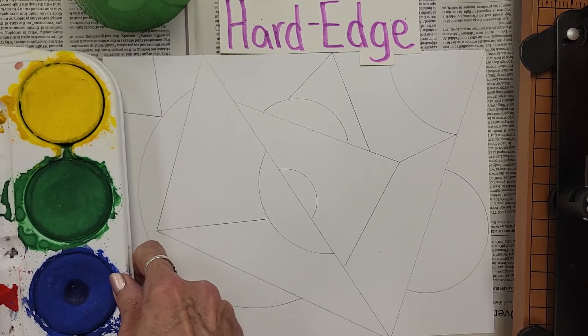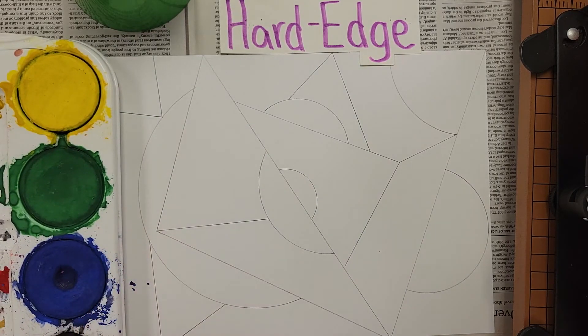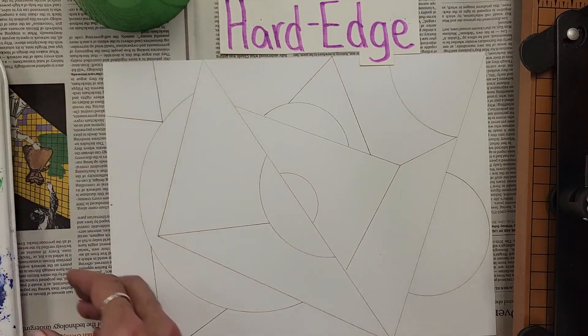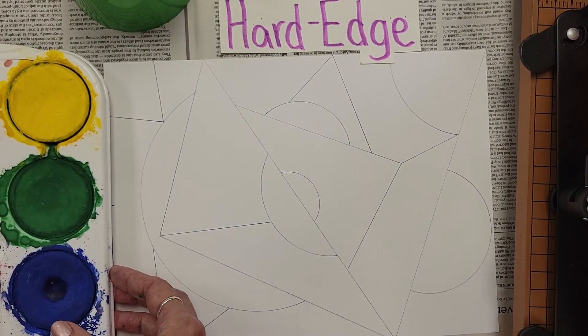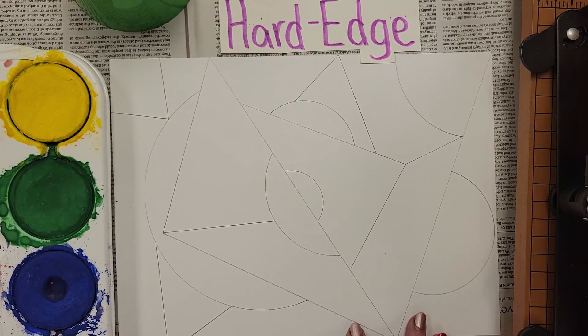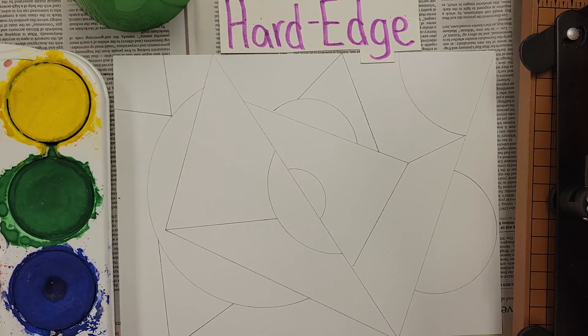Today I'm going to demonstrate painting with - for this project you're choosing three colors plus white and black. So for example, if the three colors I have chosen are yellow, green, and blue, the first thing I would want to do is figure out which of those colors is the lightest in value.